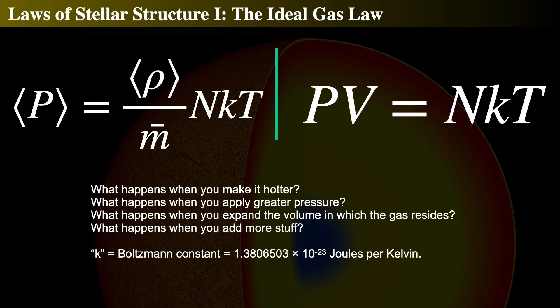If you compress a bubble of gas, the pressure goes up and the temperature goes up. If you let it expand, the pressure and temperature go down. The ideal gas law equations: the average pressure equals average density times KT divided by average particle mass, and equivalently PV equals NKT, where P is pressure, V is volume, N is the total number of particles, K is the Boltzmann constant, and T is temperature. The pressure times the volume of a packet of gas depends on how many particles are in it and their temperature.